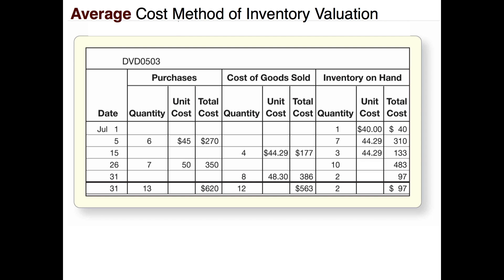On July 26th we purchased seven more items. Costs are rising again, so they're $50 each for a total of $350. We had three items and now we've added seven more, giving us 10 items totaling $483 — that's $133 from the three items previously plus $350 for the seven new items. Dividing $483 by 10 units gives us a new average cost of $48.30.